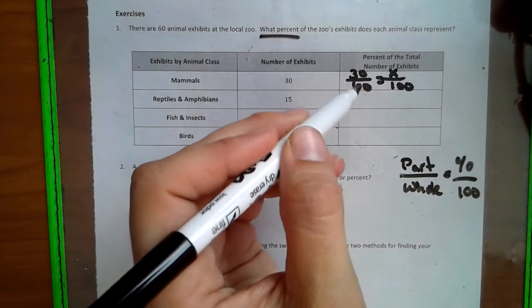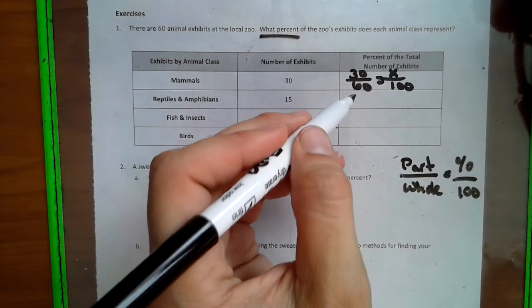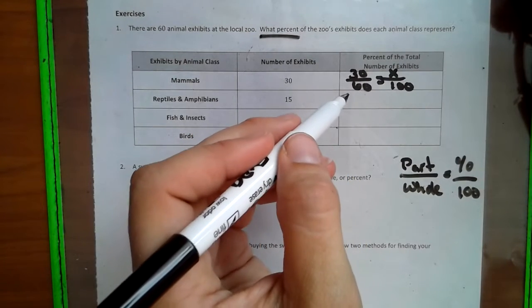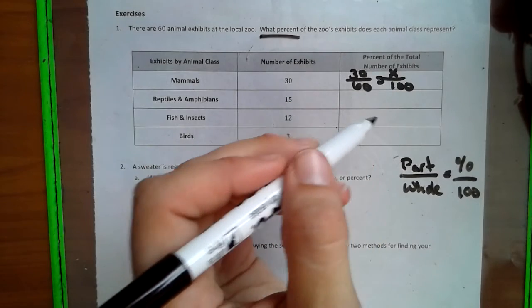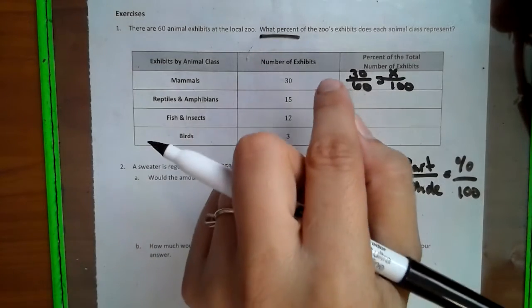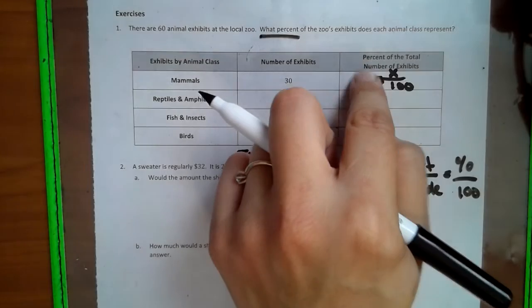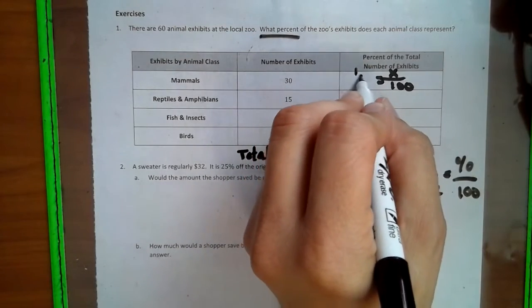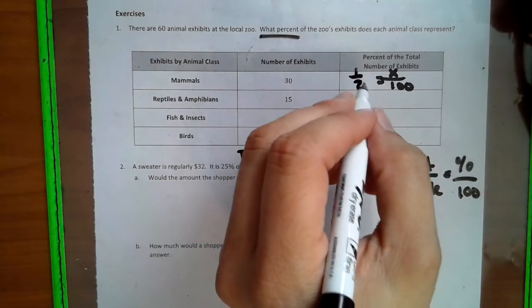So we're looking at 30 60ths. Well, hopefully you guys can see that that's one half. If you don't, it's still okay. We can still do the same method that I'm going to show you in a minute, but I'm going to take this 30 60ths and I'm going to change it into one half. And now we're going to solve this proportion.